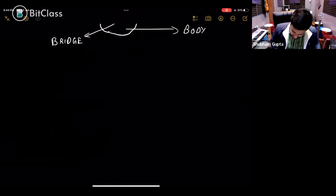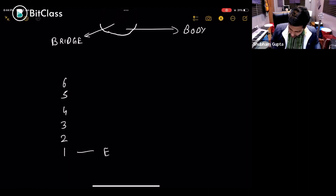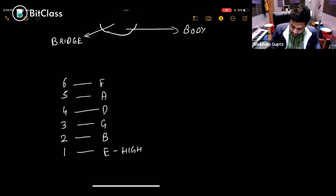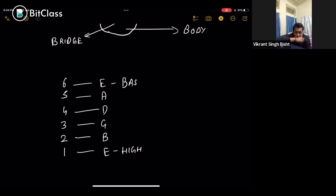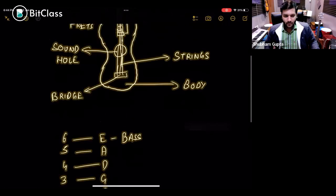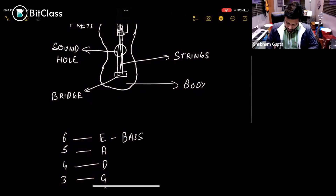When we write string names, we count the strings from the bottom to the top: one, two, three, four, five, six. So string one is high E, two is B, three is G, four is D, five is A, and the top one — string six — is low E, which is E bass. So that's it.